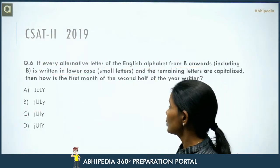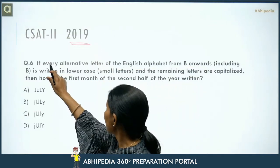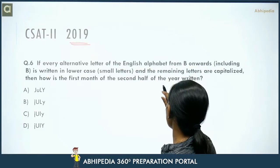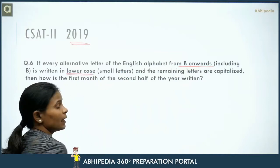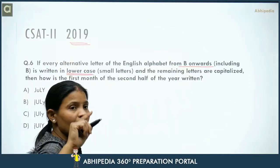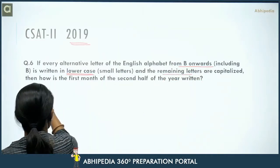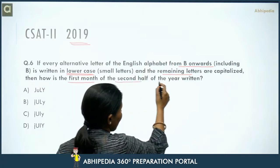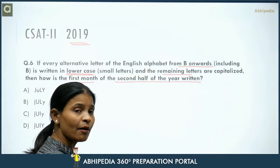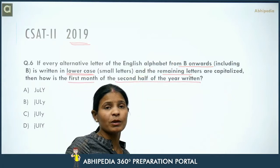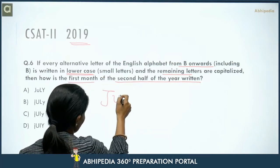Next is a 2019 question: if every alternate letter of the English alphabet from B onward including B is written in lower case, and the remaining letters are capitalized, then how is the first month of the second half of the year written? The first half ends at June, so the first month of the second half is July.